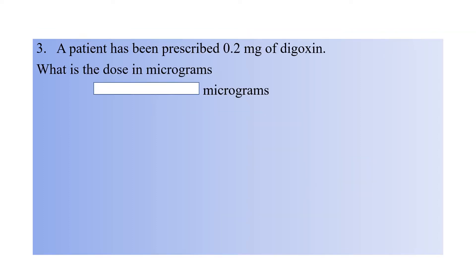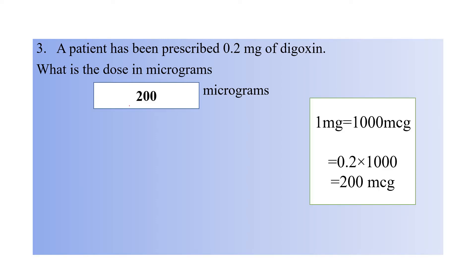Question number three: a patient has been prescribed 0.2 mg of digoxin. What is the dose in micrograms? The correct answer is 200 micrograms. As you know, 1 mg equals 1000 mcg, so you calculate 0.2 multiplied by 1000, which gives 200 micrograms.